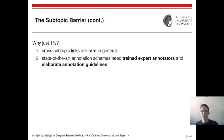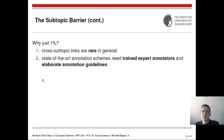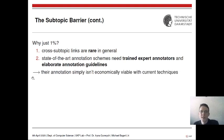You might wonder why only one percent. There are two reasons. First, cross-subtopic links are quite rare in general across documents, so to annotate a corpus with many of these links we would have to annotate a lot of documents. Connected to this, current state-of-the-art annotation schemes need trained expert annotators and long, complex annotation guidelines — 20-plus pages — making annotation not economically viable.